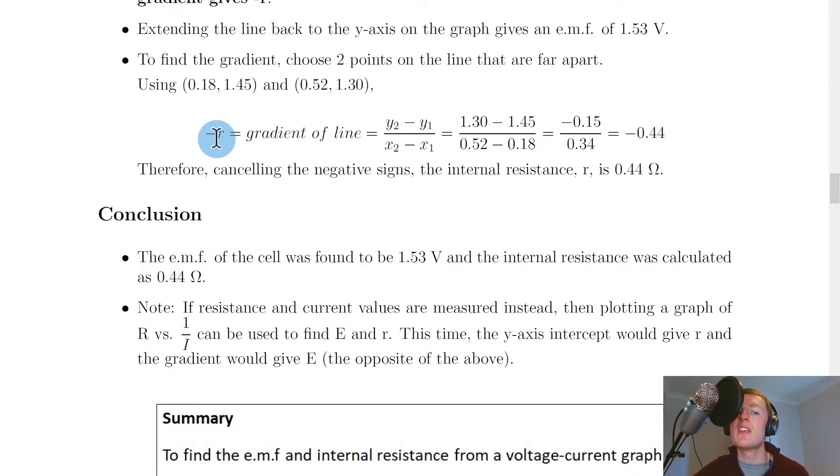So doing that we can say that minus r the negative of the internal resistance is equal to the gradient of the line. So this is equal to y2 minus y1 over x2 minus x1 or the change in y over the change in x which is equal to 1.3 minus 1.45 from here and 0.52 minus 0.18 from the x terms there. And if you put that into a calculator you get minus 0.15 divided by 0.34 which gives us minus 0.44.